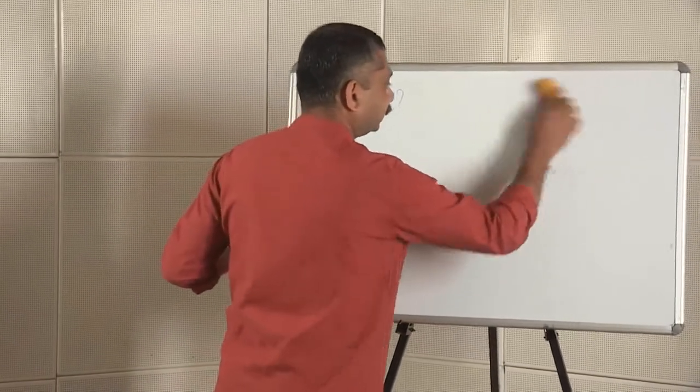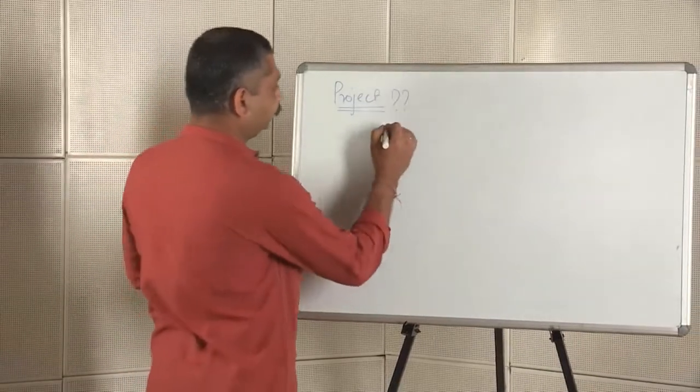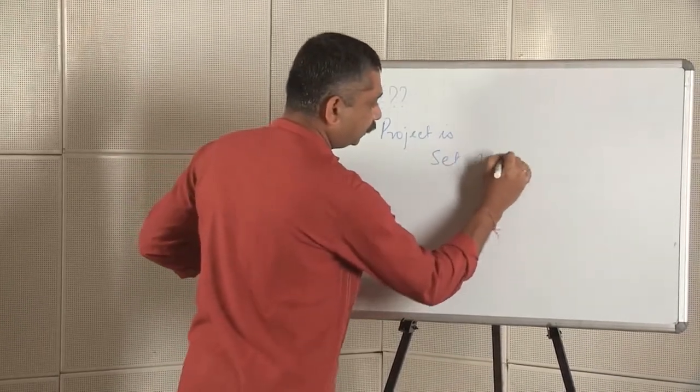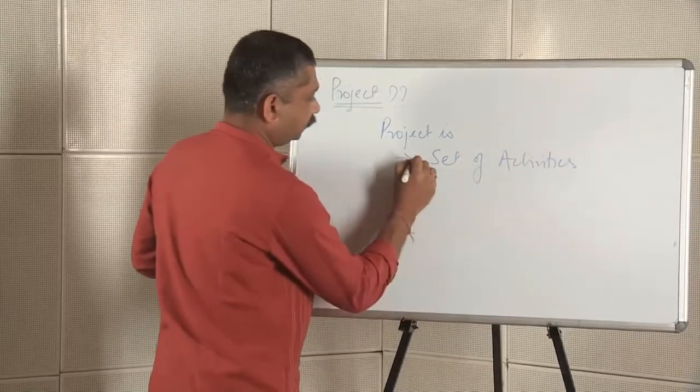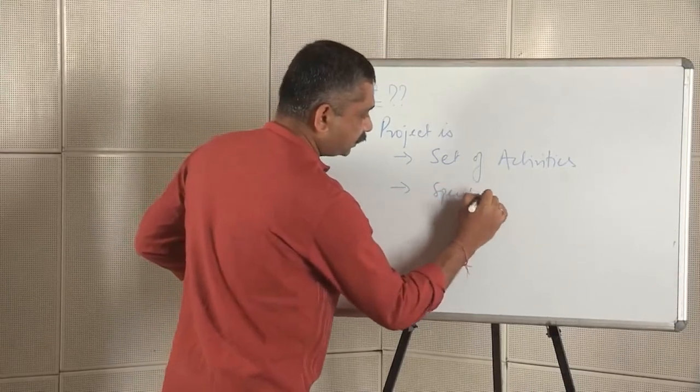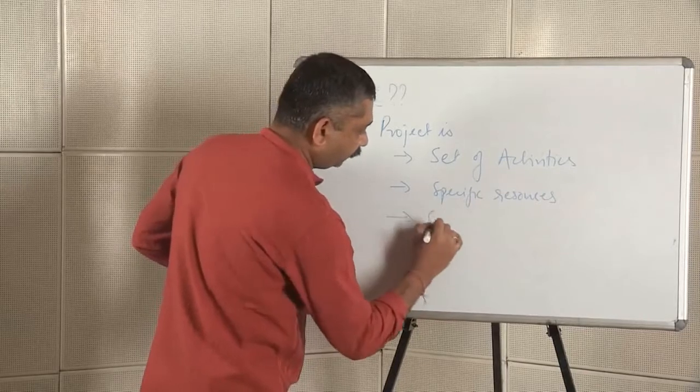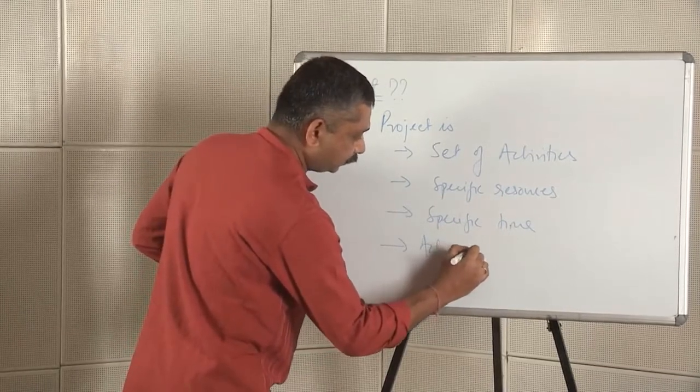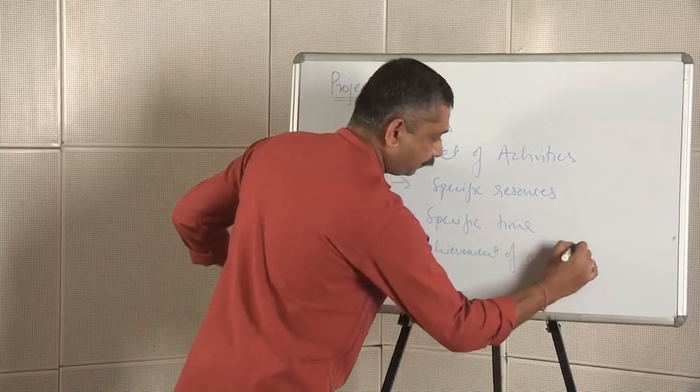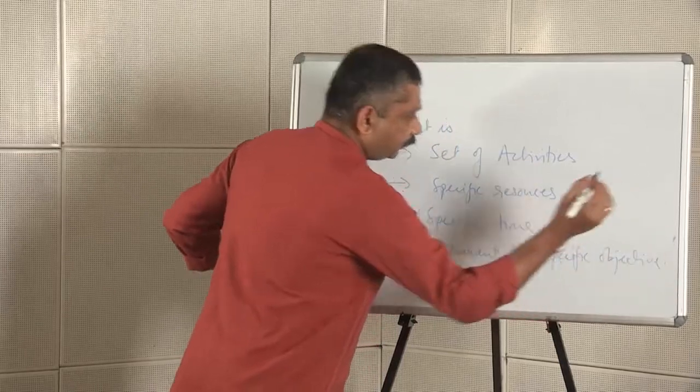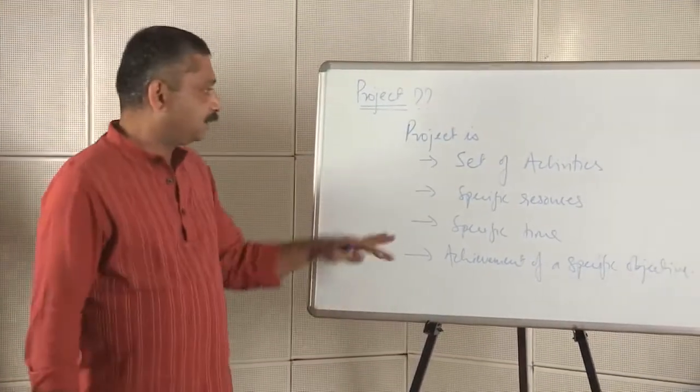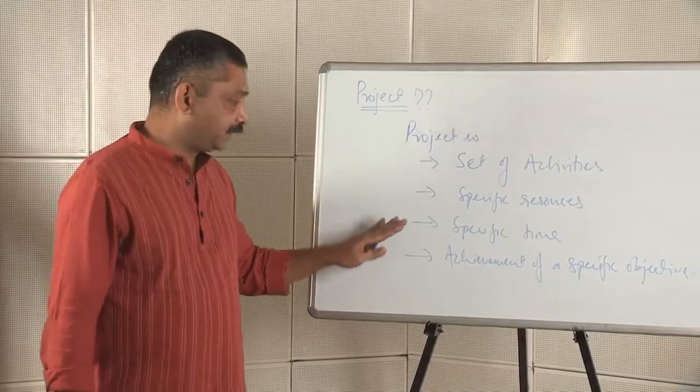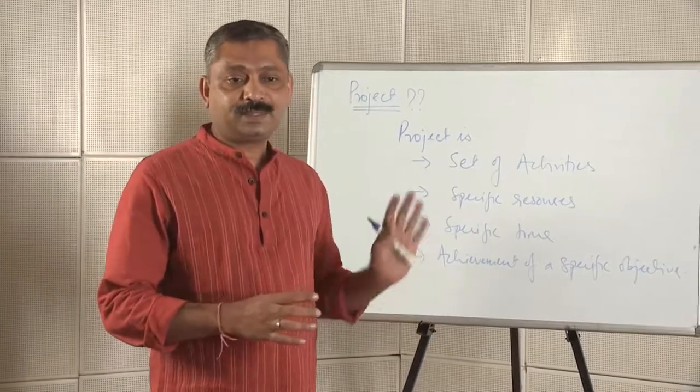Well, I will try to write mine. A project is nothing but a set of activities implemented with specific resources within a specific time towards achievement of a specific objective. You can write your own definition, but yes, there are four things which define a project: a set of activities, specificity of resources, specific time, and a single objective to be achieved. That, in a nutshell, is a project.